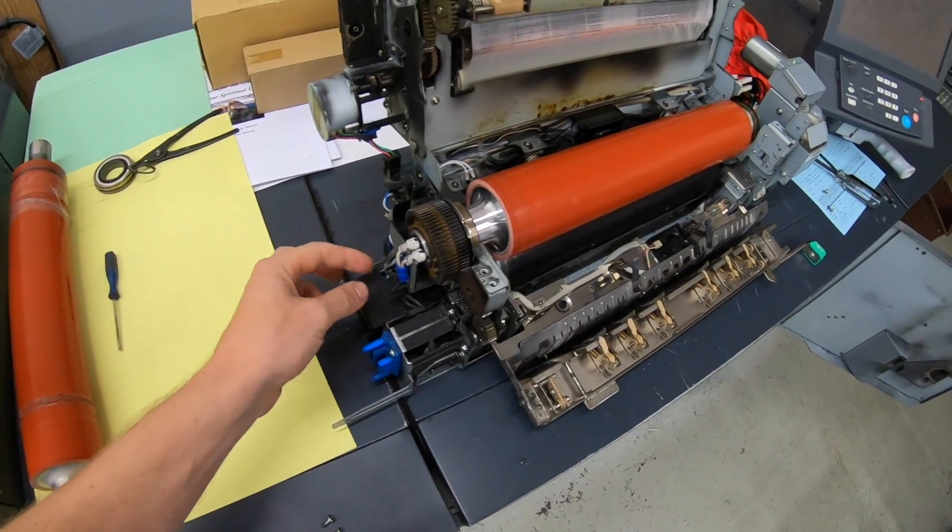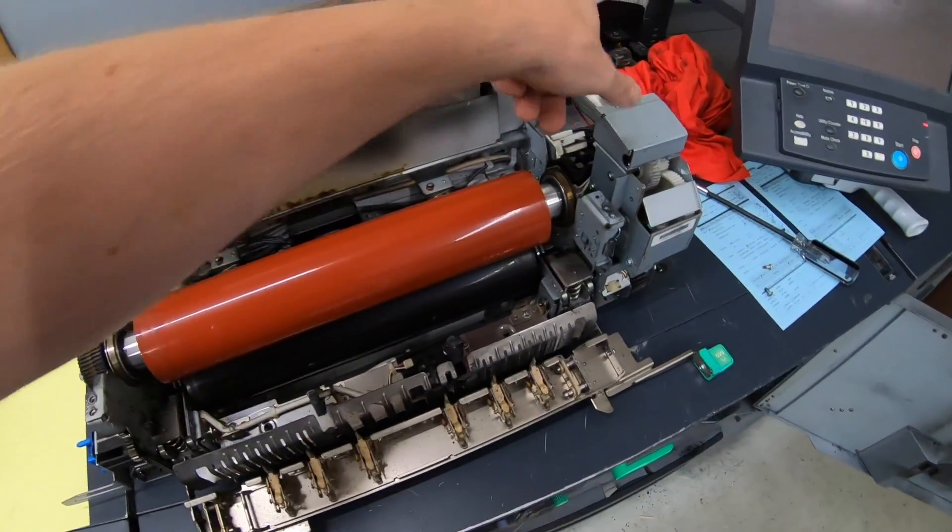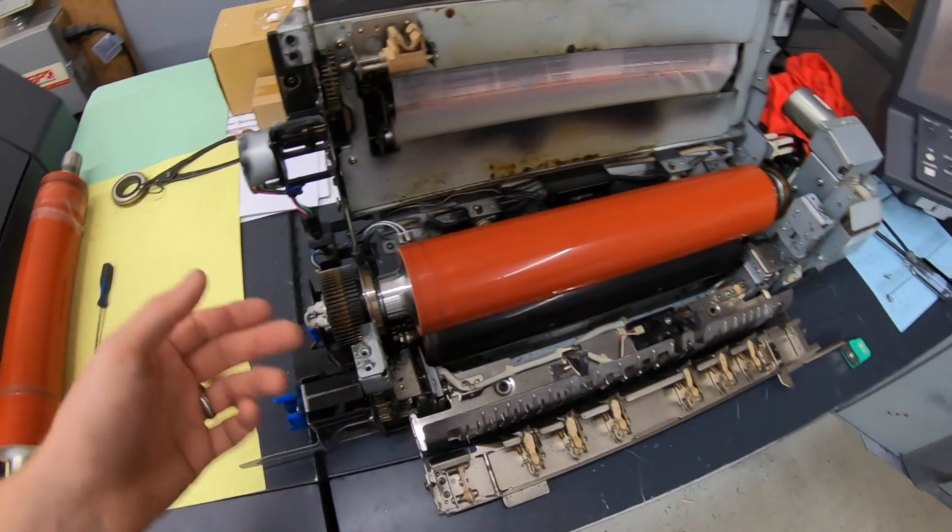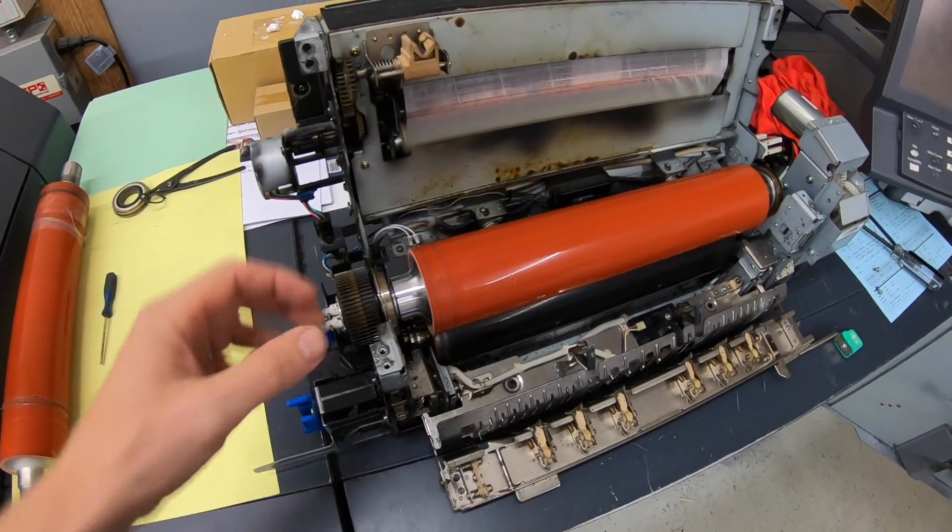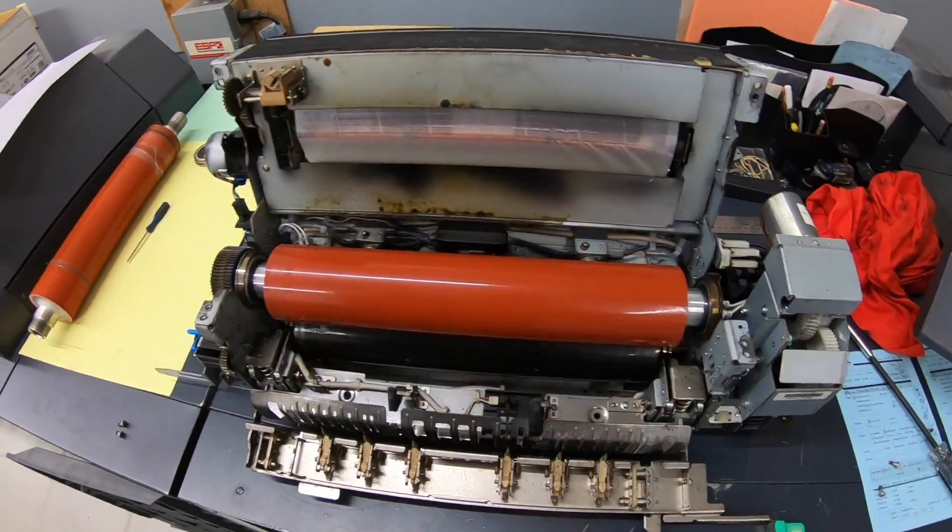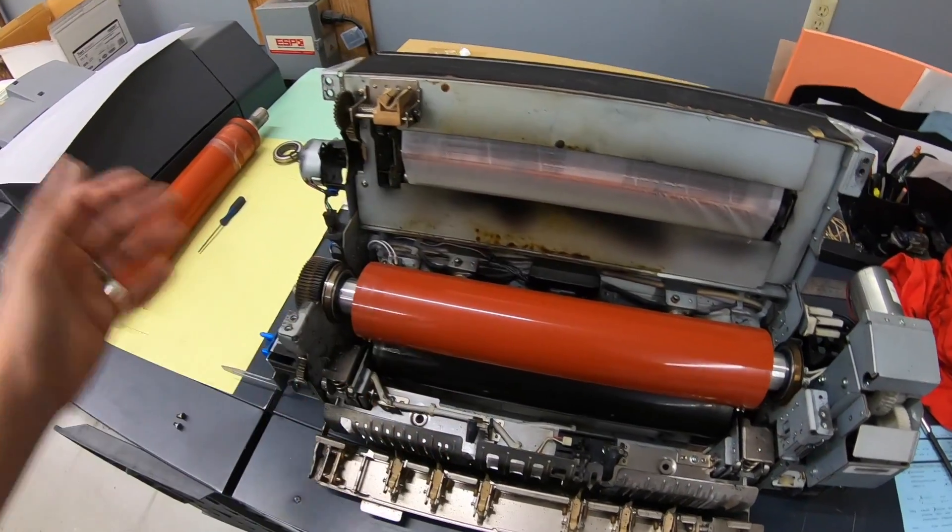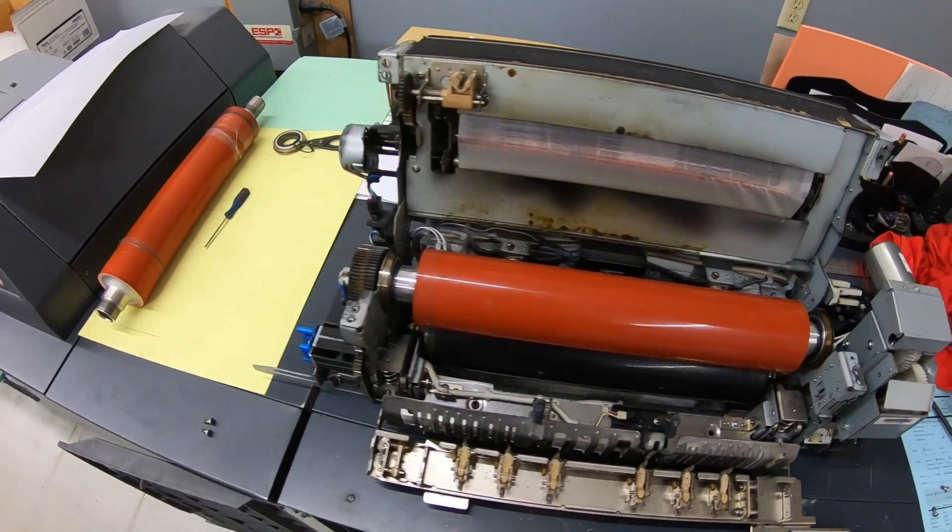We're going to disconnect the electrical connections on both sides. And then this fuser roller is just going to lift out. Then we're going to take off the insulating sleeves and bearings. Put that on the new one. Put the lamps in and do it all in reverse.